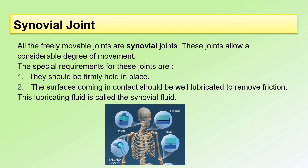Now, let's look at some properties of synovial joints. As we already know, all the freely movable joints are synovial joints. These joints allow a considerable degree of movement. The special requirements for these joints are: first, they should be firmly held in place; and second, the surfaces coming in contact should be well lubricated to remove friction. This lubricating fluid is known as the synovial fluid. This joint is called a synovial joint because of the synovial fluid.